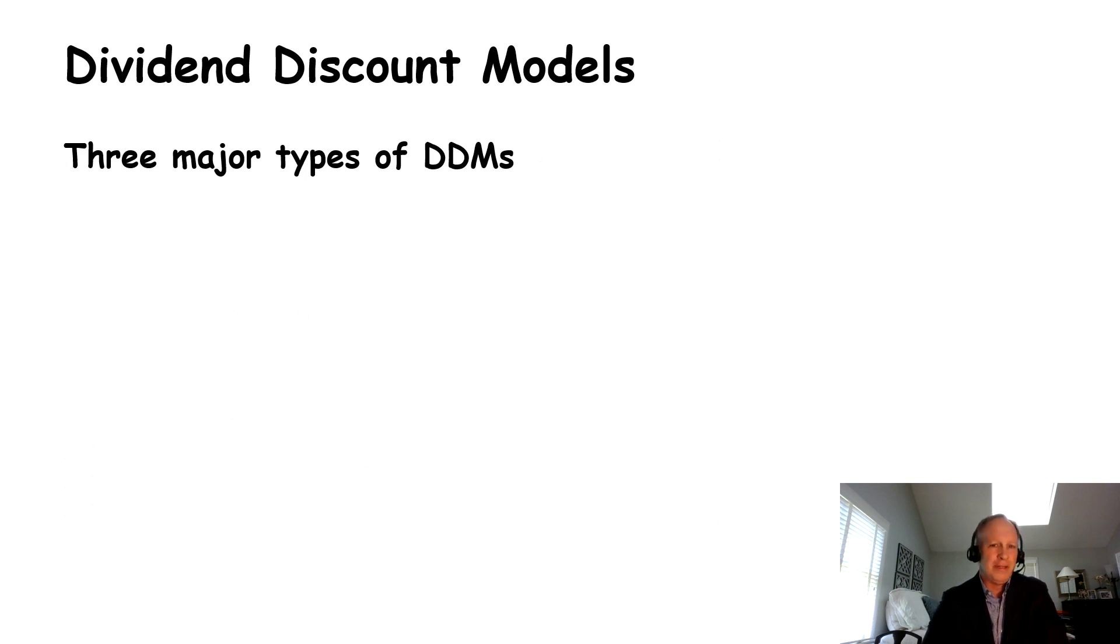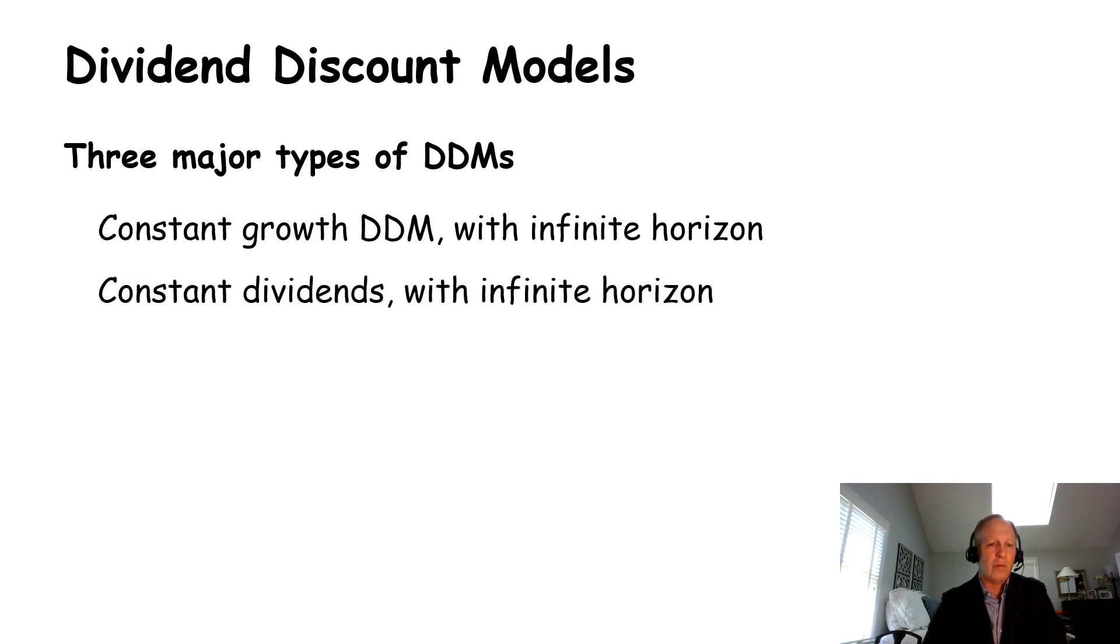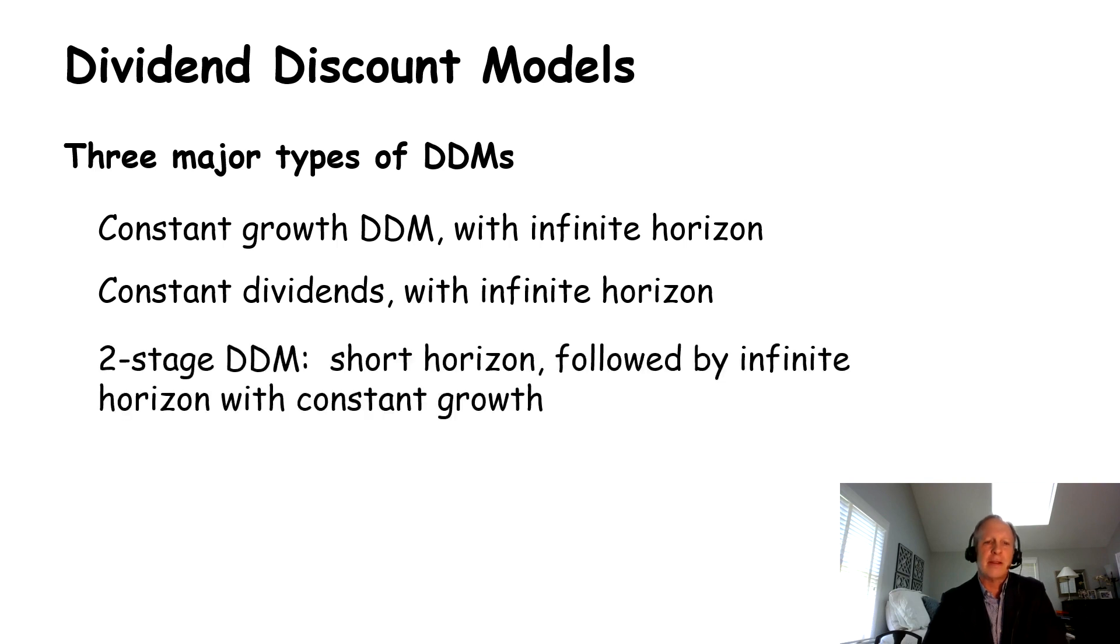So there's three major types of DDMs. There's a constant growth dividend discount model with an infinite horizon. I'll walk you through that in a second. And then there's one that we have constant dividends, so there's no growth in the dividends, and that is also with an infinite horizon. And then third, there is a two-stage dividend discount model. So you have like this short horizon period and it's followed by an infinite horizon period, often with constant growth.